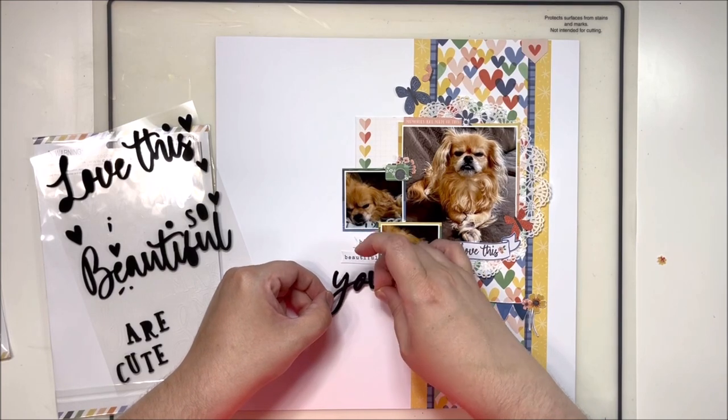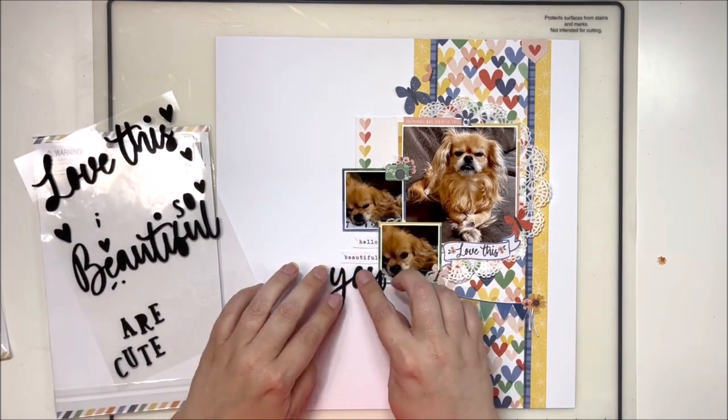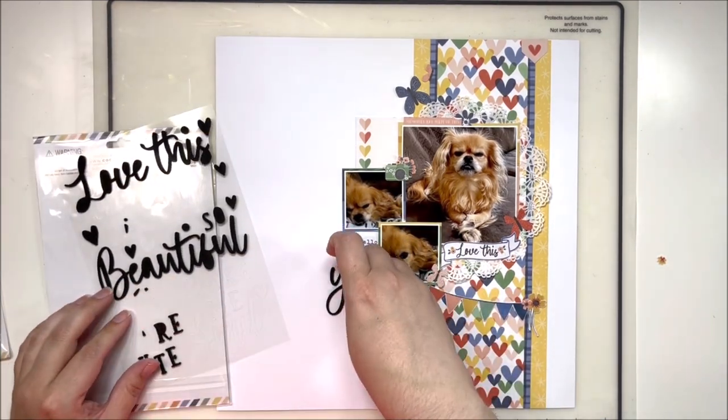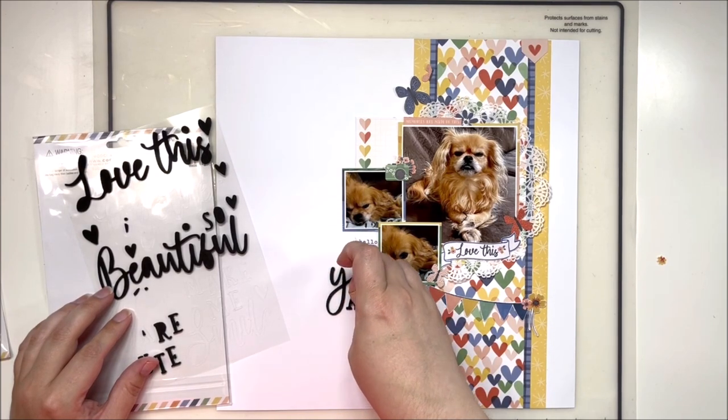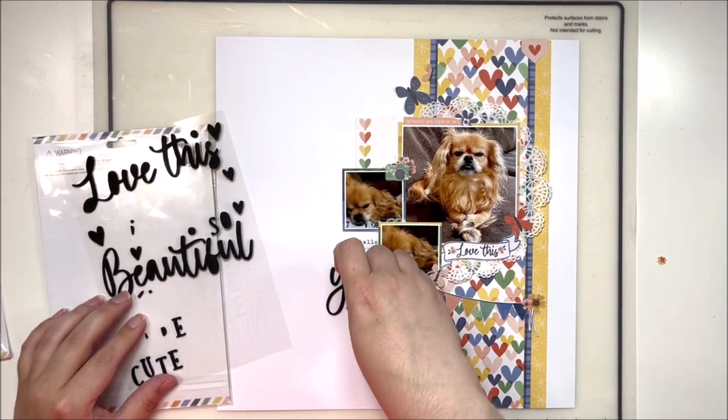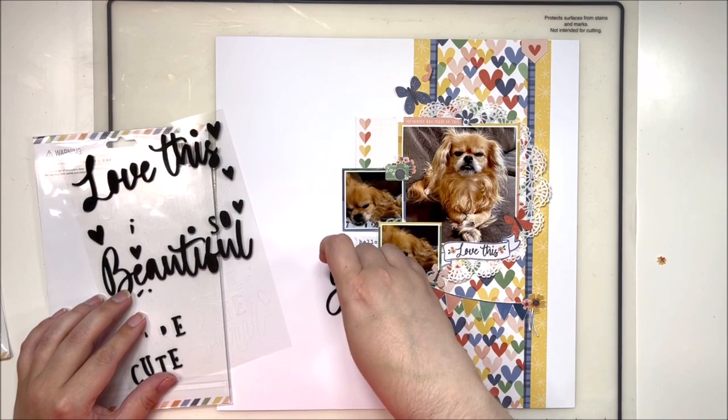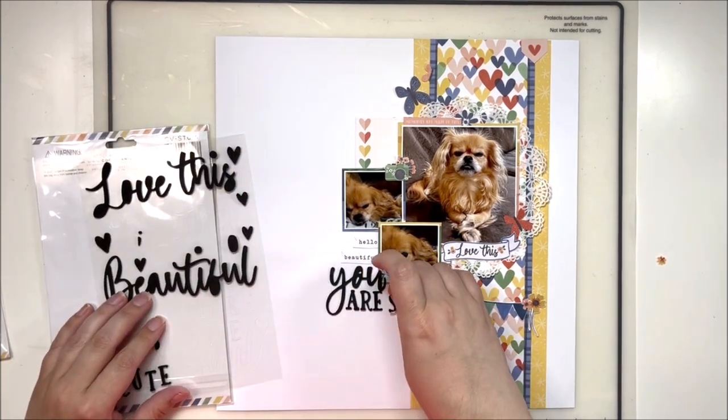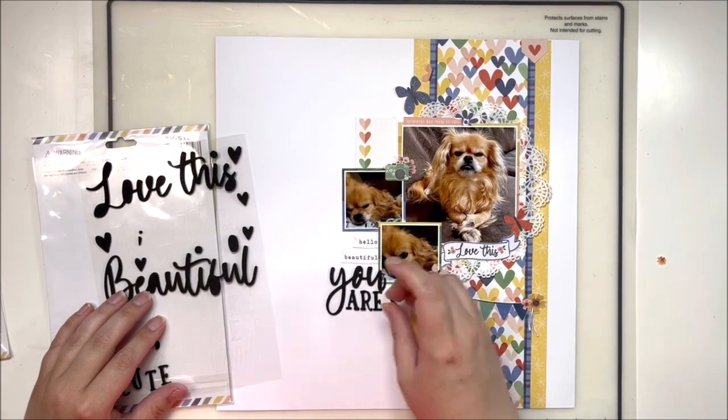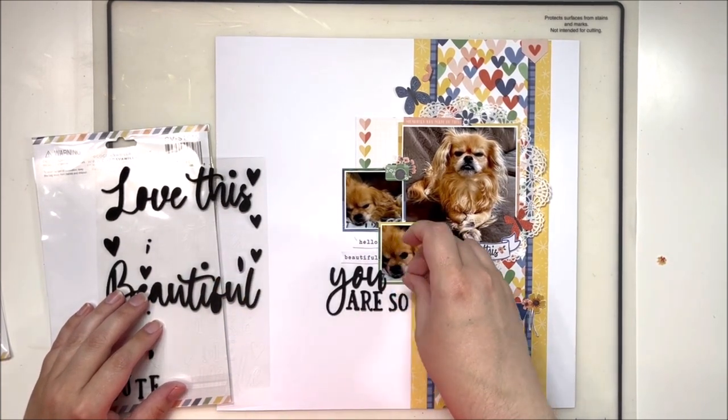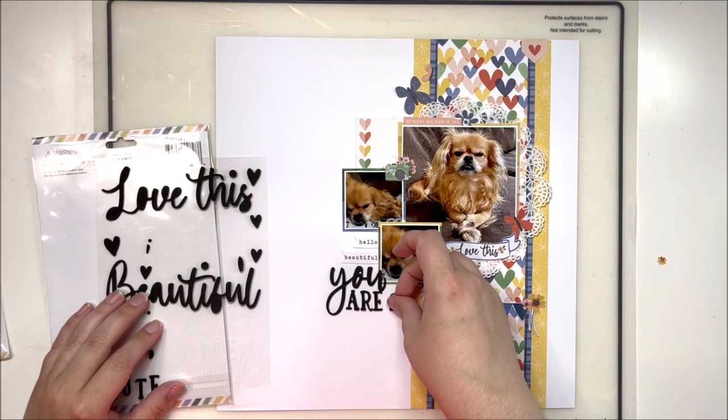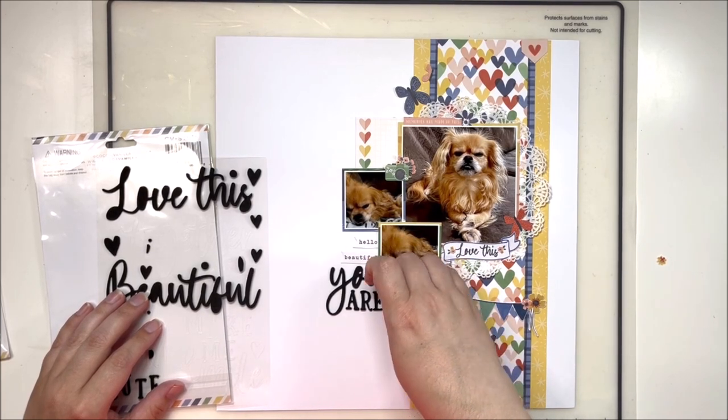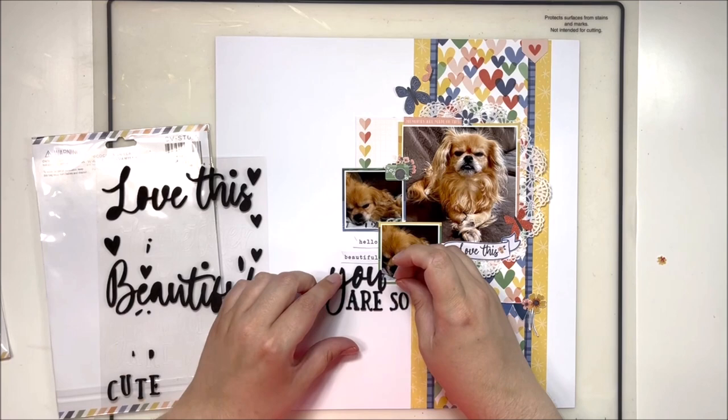That softens that linear look and gives it more of a whimsical feel and I really like that balance of the linear and the whimsical in my layouts. I think it creates a really fun effect on the page and keeps it from feeling too boxy because sometimes when we're using rectangle and square photos and then rectangle and square backgrounds it can feel kind of boxy on the page and you need those rounded corners and the butterflies and the hearts and things to soften that look and just give it a little bit more interest.